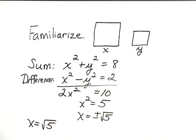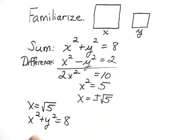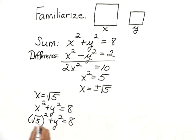Now, let's find out what the y value has to be. Well, we know that x squared plus y squared equals 8, which would give us the square root of 5 squared plus y squared equals 8. This is 5.